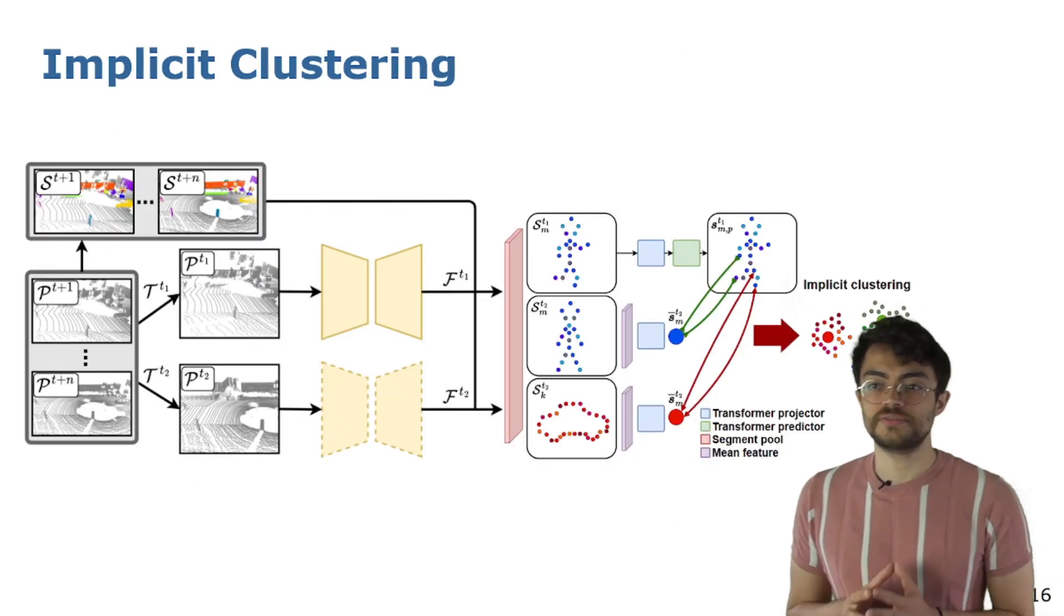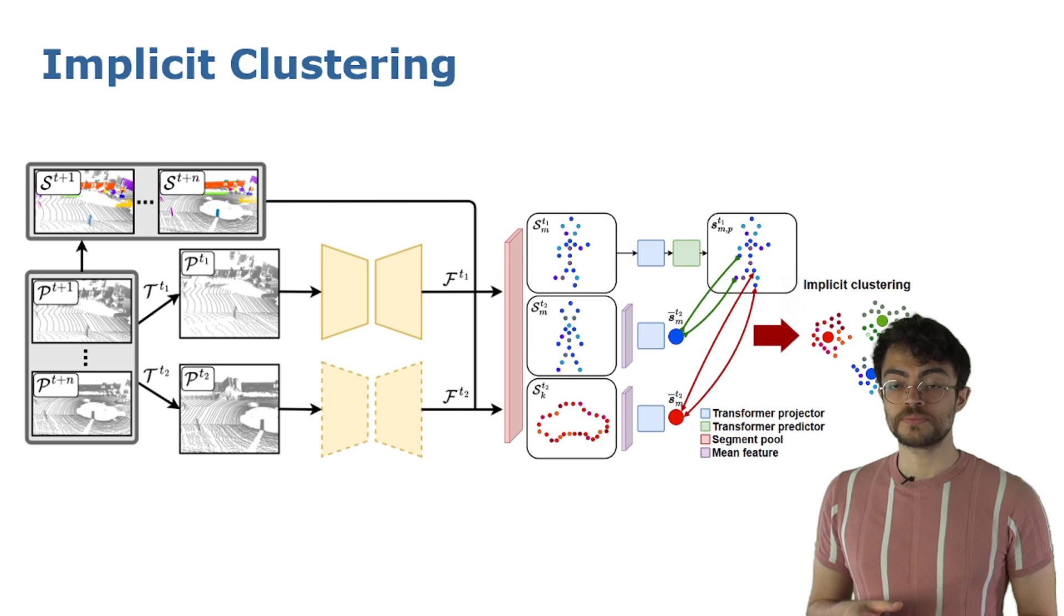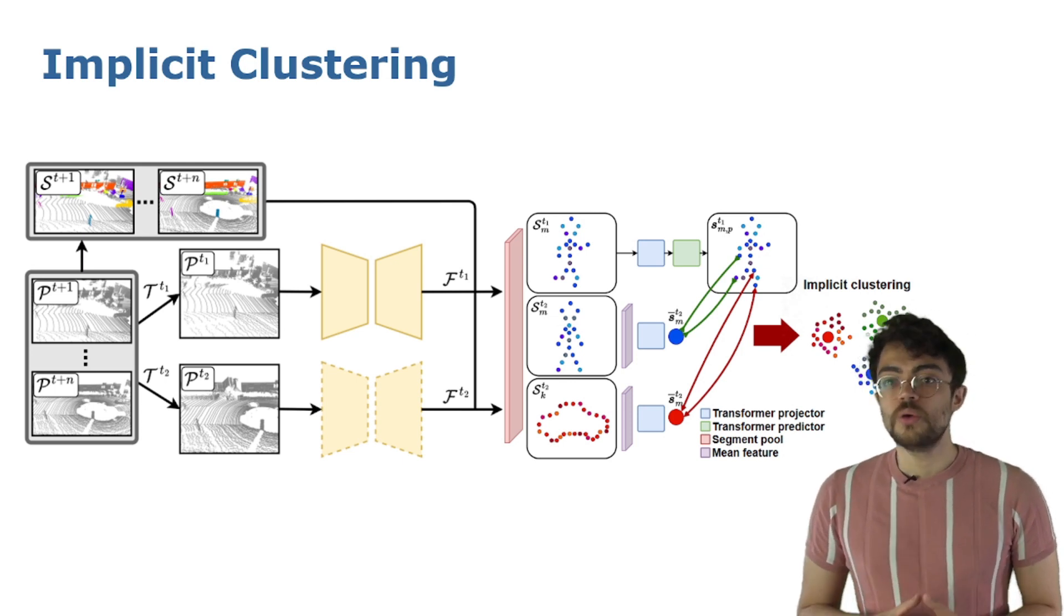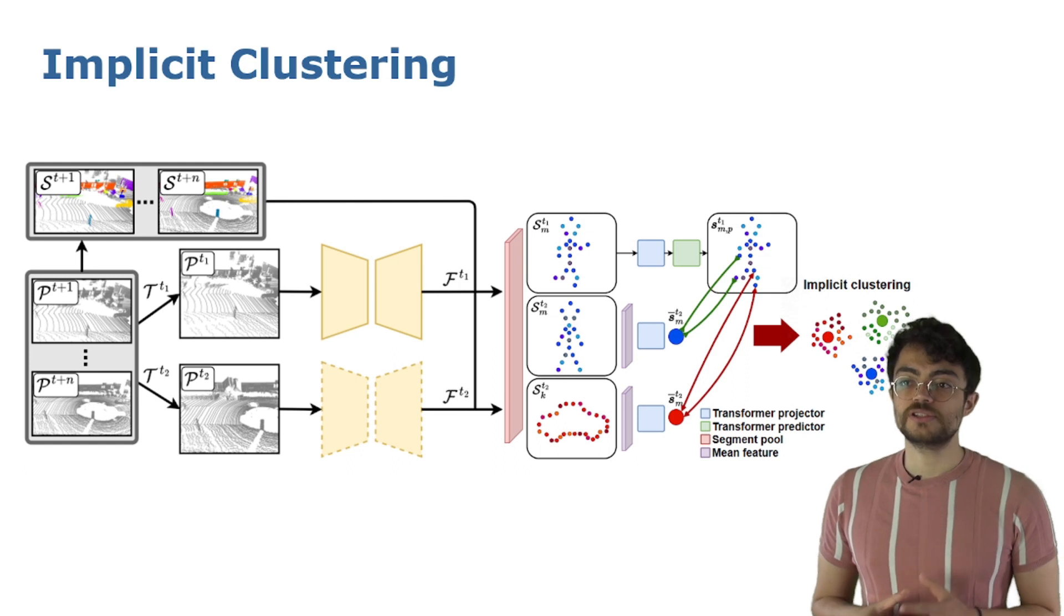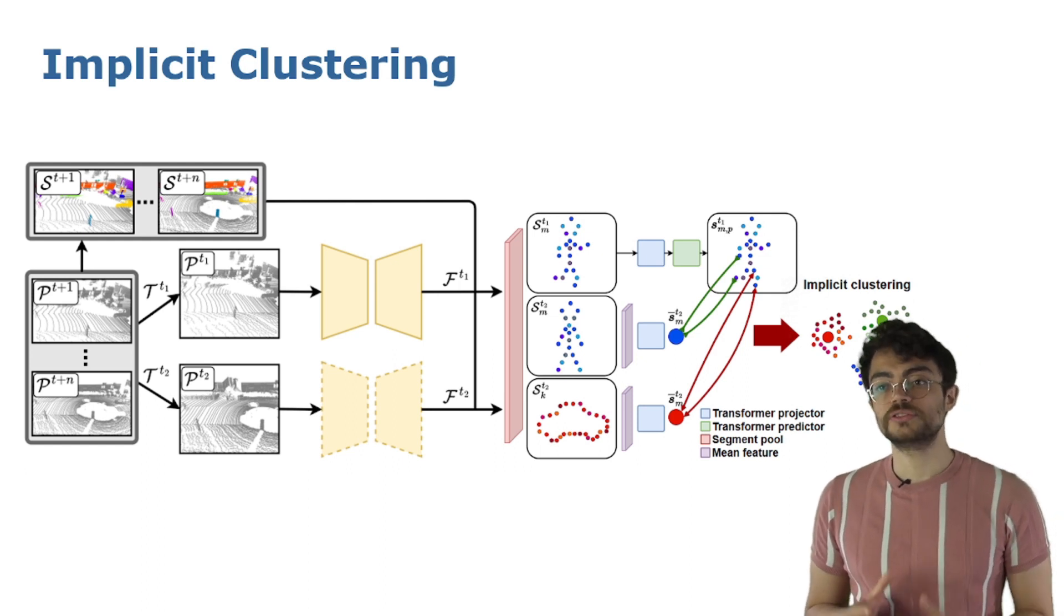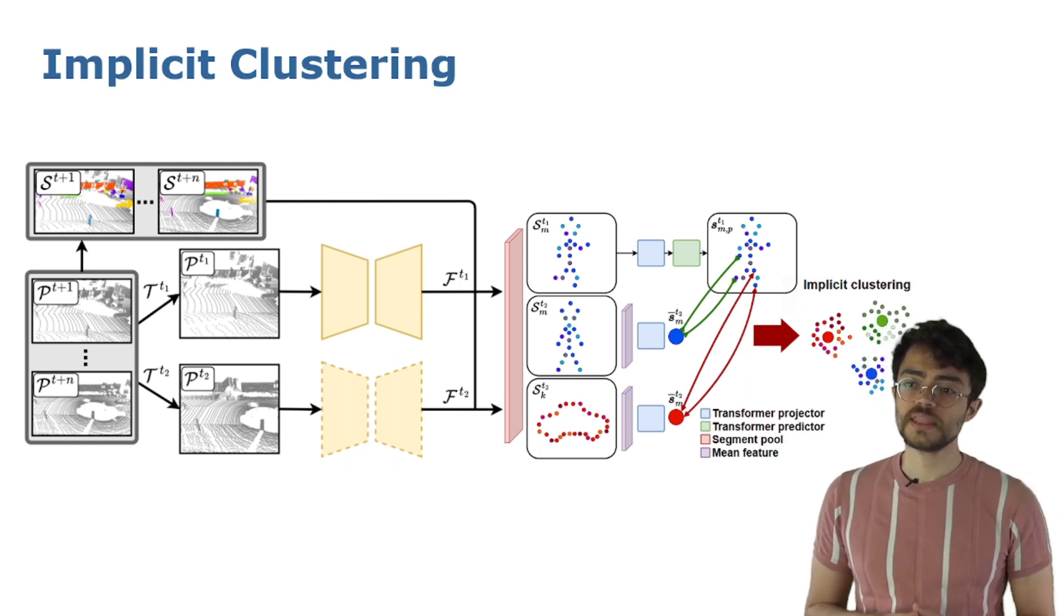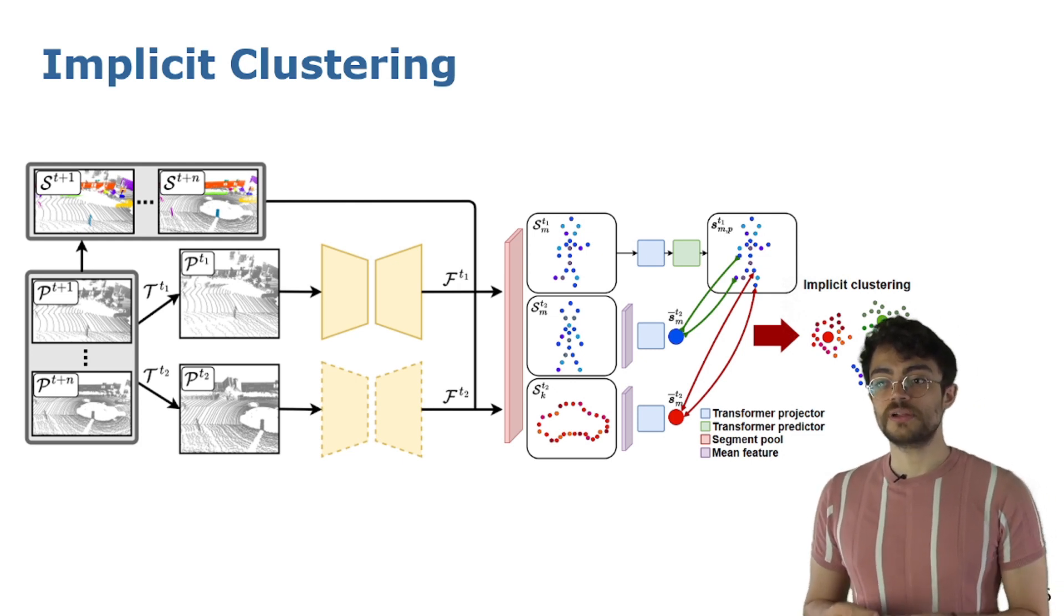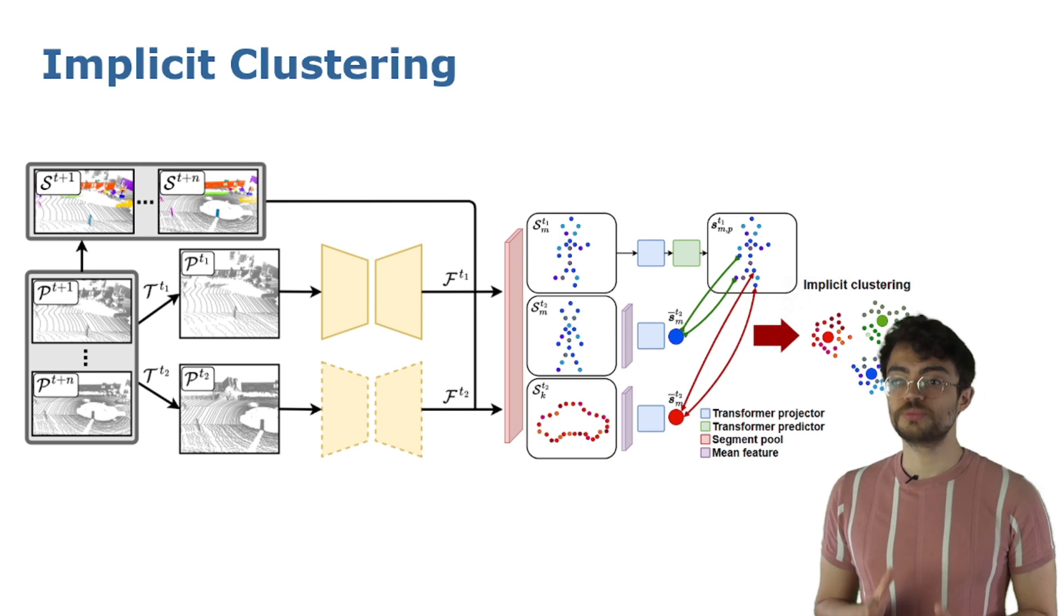We formulate this discriminative task as an implicit clustering scheme. Since we aim at the fine-grained point-wise representation, we want all the points from the same segment to be similar to each other and apart from other segment's points. Given the two views of the objects, for one of them we use a two-layer transformer encoder as a projector to compute point-wise features.